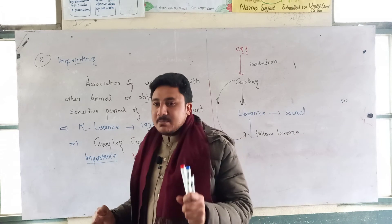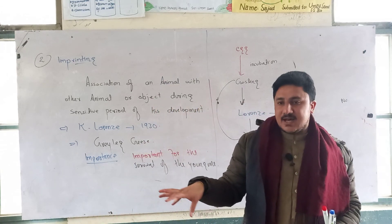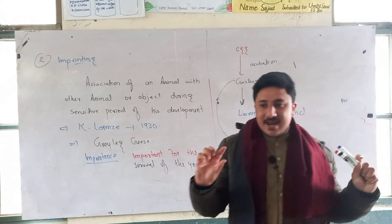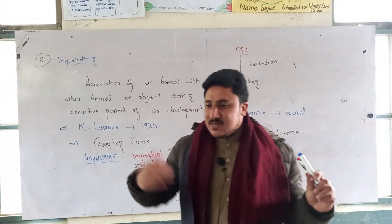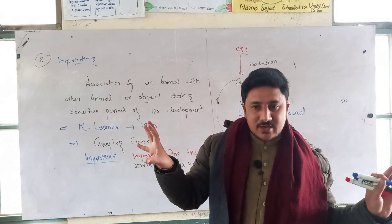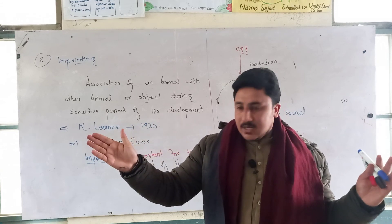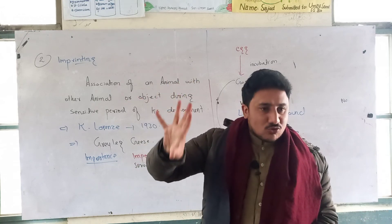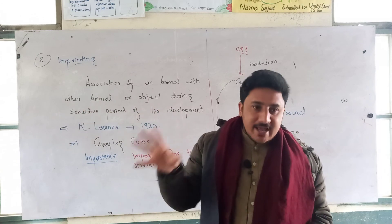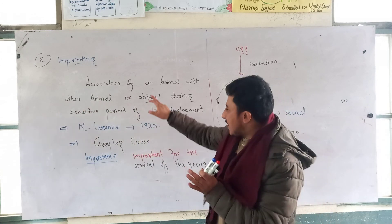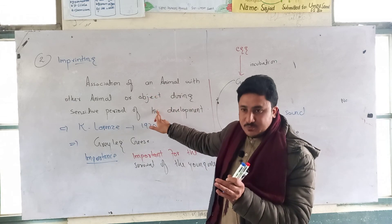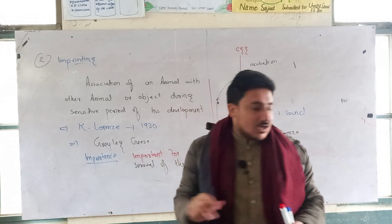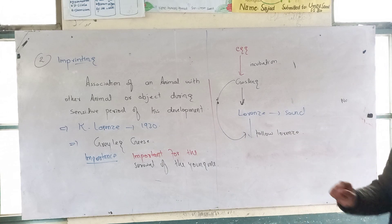Now moving to habituation: for example, rodents respond to an alarming call, but after some time, the response decreases with repeated exposure to the stimulus. This is different from imprinting. This connects to conditioned reflex type one and conditioned reflex type two.